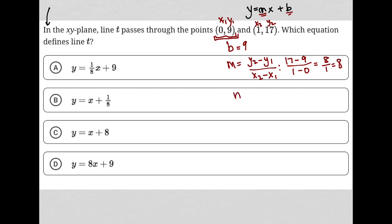So now I know that my m value is equal to 8. So I'm going to go back up here and just plug my m value in, as well as my b value. And what I get is y equals 8x plus 9. That is my answer. And therefore choice D is the correct answer here.